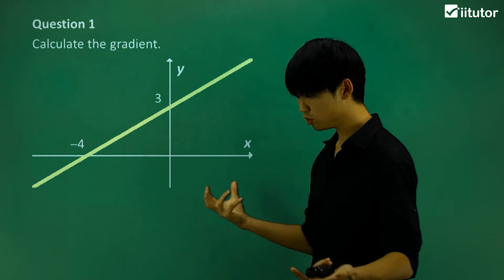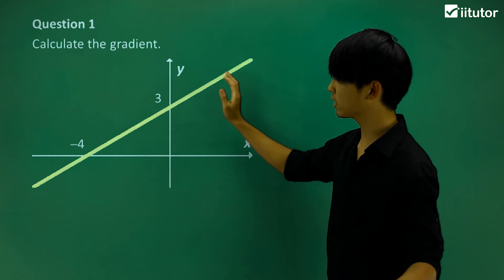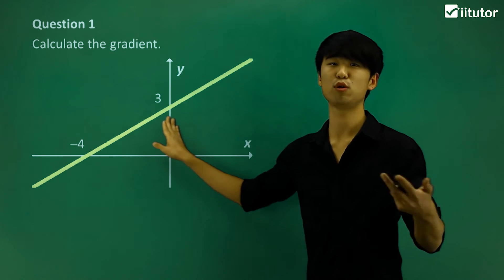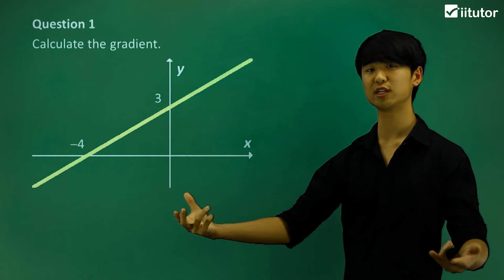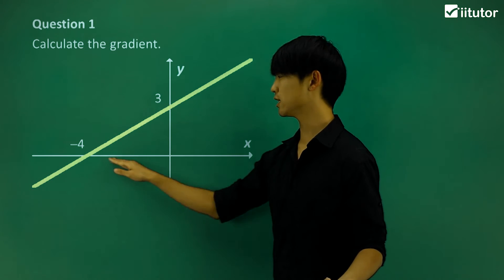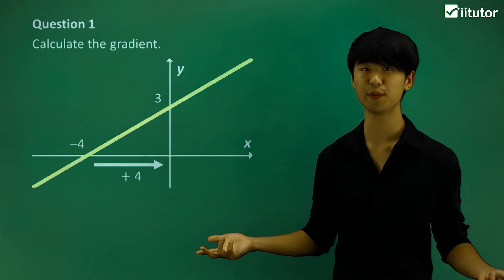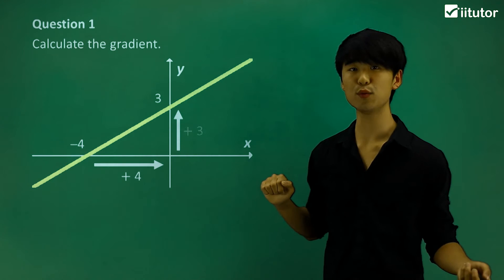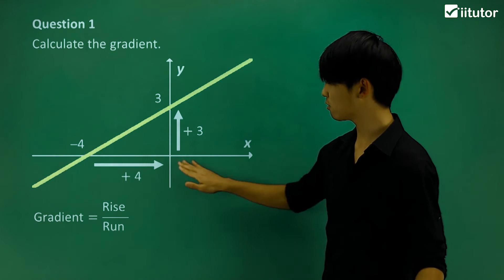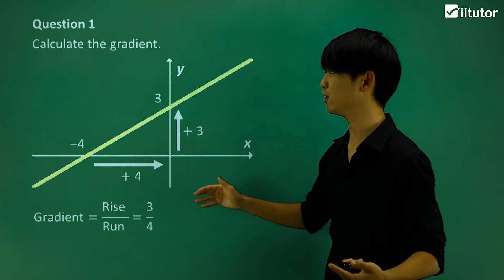Let's use some numbers to actually calculate the gradients of some lines. Looking at question one, we're going to calculate this line's gradient. We're given that this intercept is negative 4 and this intercept is positive 3. The gradient is the rise over the run. The run from negative 4 to 0 is positive 4, and from 0 to 3 the rise is positive 3. So gradient equals 3 over 4.